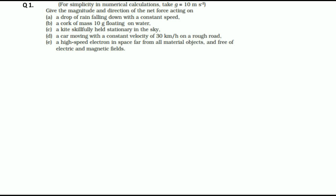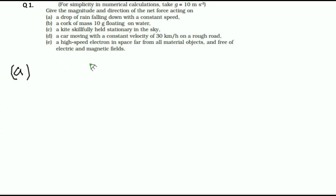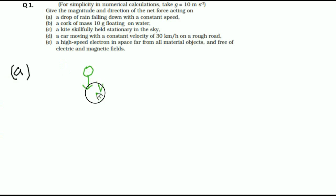Question number 1: for simplicity in numerical calculation, take g equal to 10 meter per second square. Give the magnitude and direction of net force acting on — go for part A — a drop of rain falling down with constant speed. So, suppose this is a drop falling down with constant speed; this is given as constant.